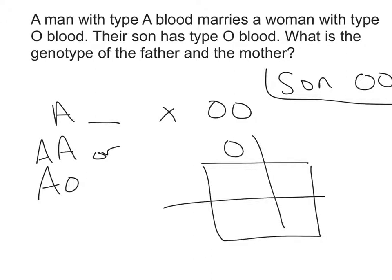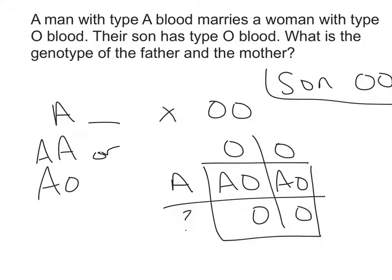We know that the female is OO, and we know that dad has at least one A allele but we don't know his second allele yet. We fill in the Punnett square with this information, and then we look at what we know of the son's genotype. For us to be able to get a child with type O blood, the father has to have an O allele to give to his kids. This means that dad has to have the genotype AO — he is heterozygous for type A blood.